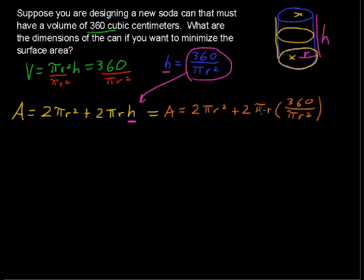Okay, let me start cancelling some stuff out. The pi's cancel. One of the r's cancels. So we have just r to the first power in the denominator. We're left with 2 times 360 divided by r to the first power.